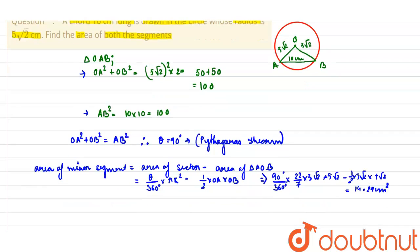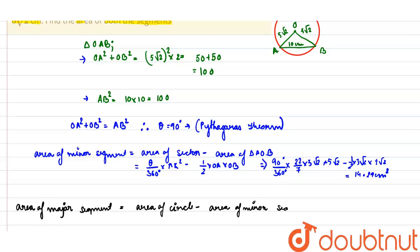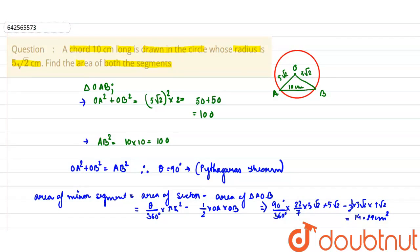So the area of the minor segment is 14.29 cm². Now we find the area of the major segment. Area of major segment = area of circle − area of minor segment = (22/7) × (5√2)² − 14.29 = 157.14 − 14.29 = 142.85 cm². These are the two answers being asked in the question.